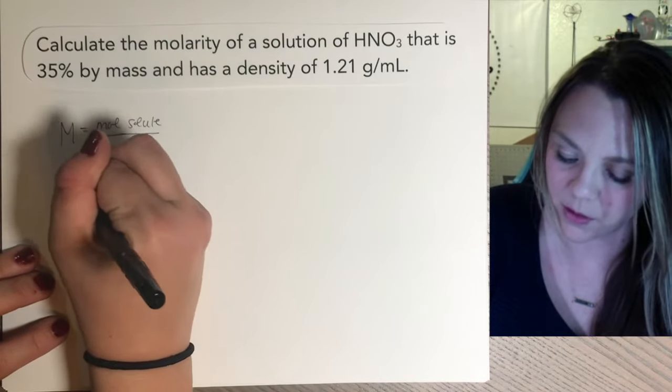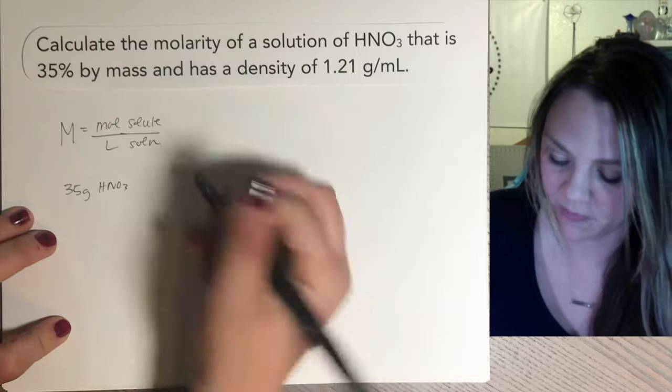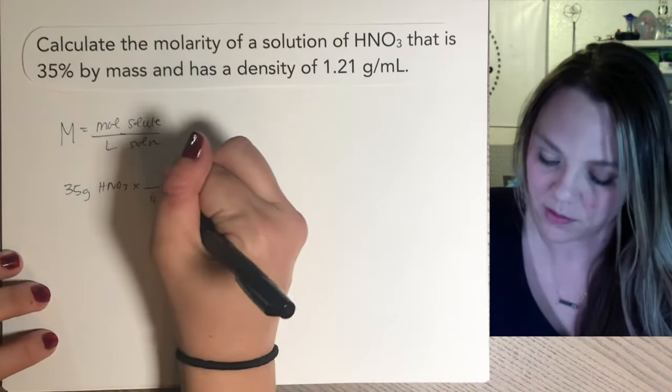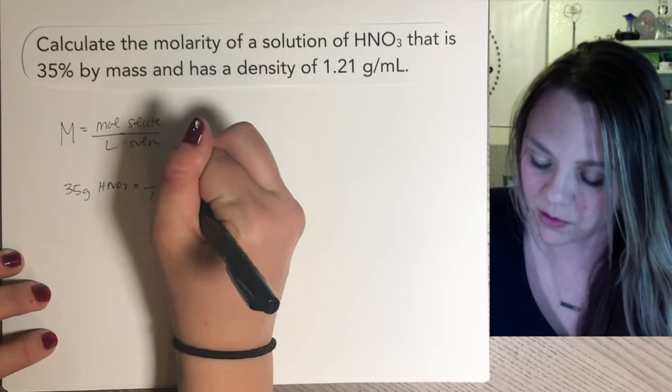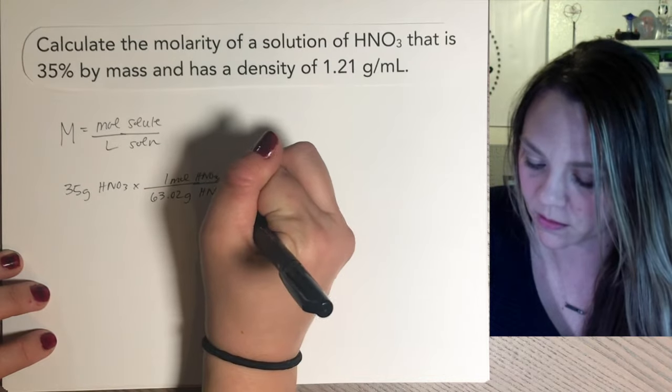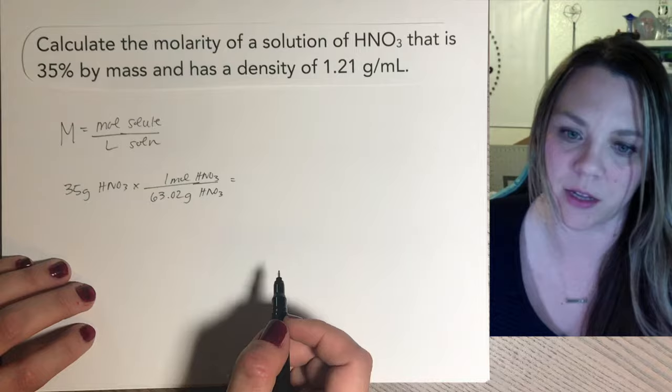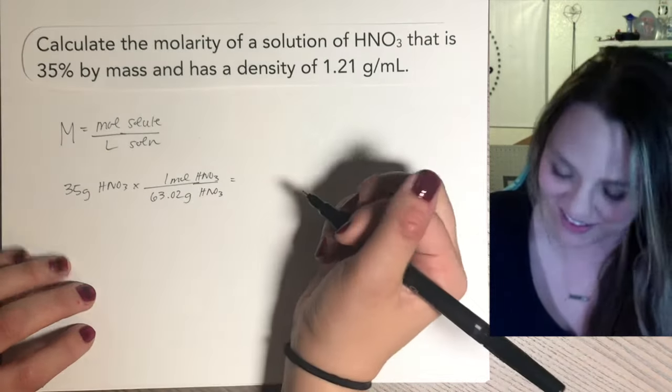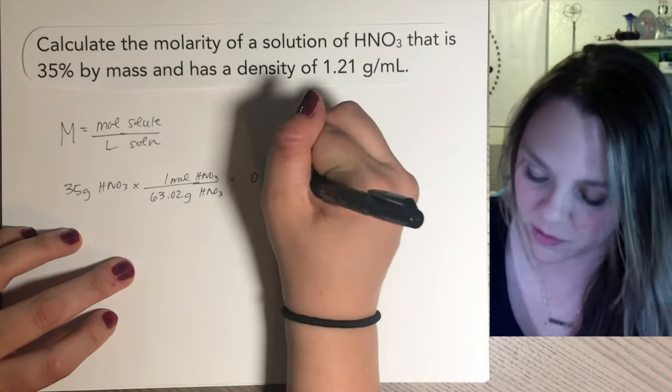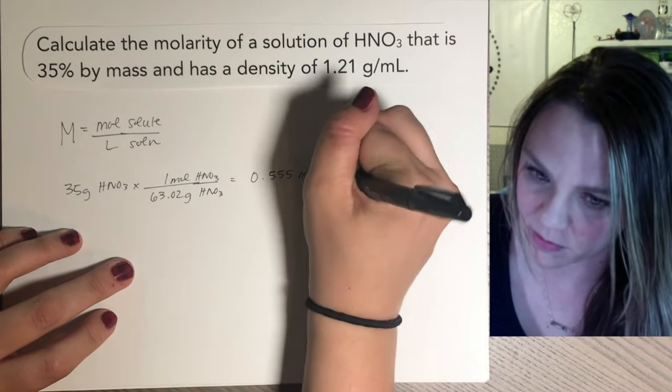Okay, so I'd start with my 35 grams of HNO3 and do the literally exact same thing I did before, divide by 63.02 grams for one mole, right? Divide by your molar mass to calculate exactly how many moles of HNO3 you have. And you get a number of 0.555 moles.